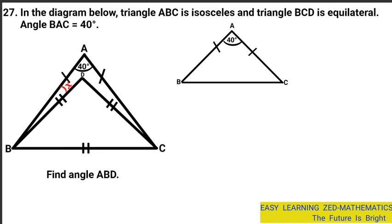Now we come to the second triangle, triangle BCD, which is equilateral. An equilateral triangle is a triangle with equal sides. You can see the double tick marks on all three sides of this triangle, indicating they are all equal. So these are the two triangles we are given.